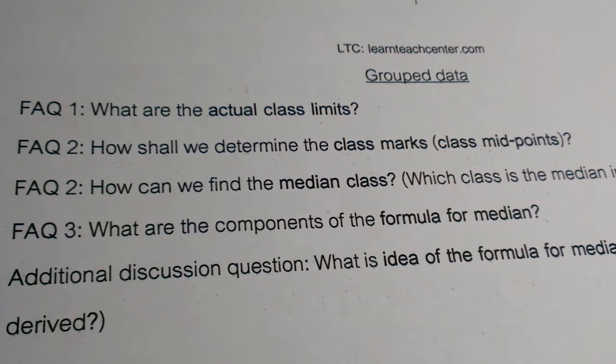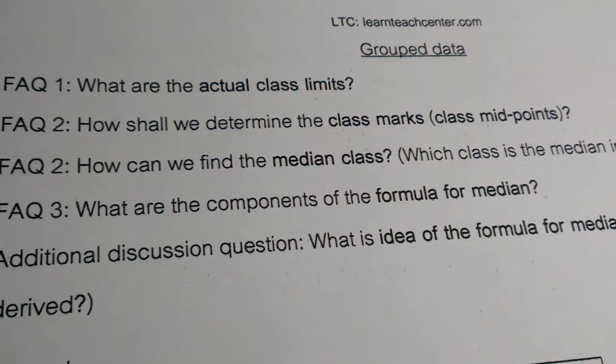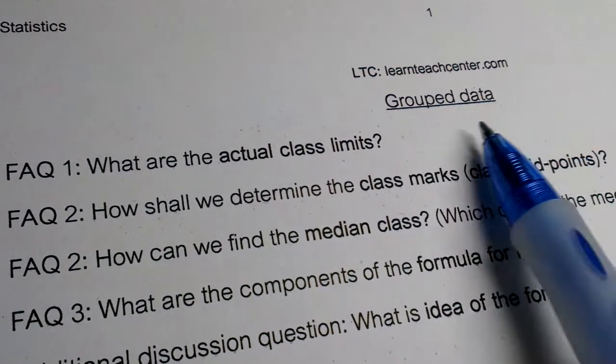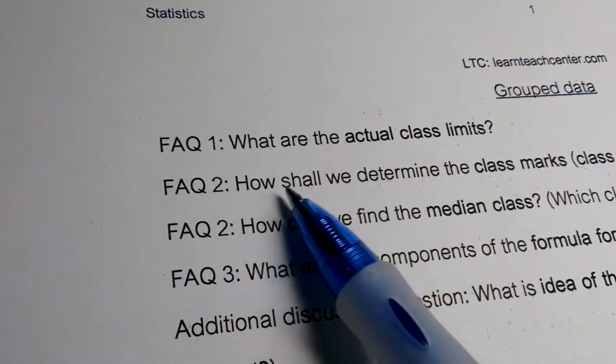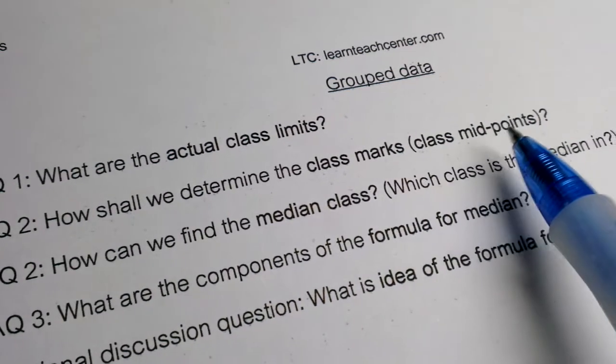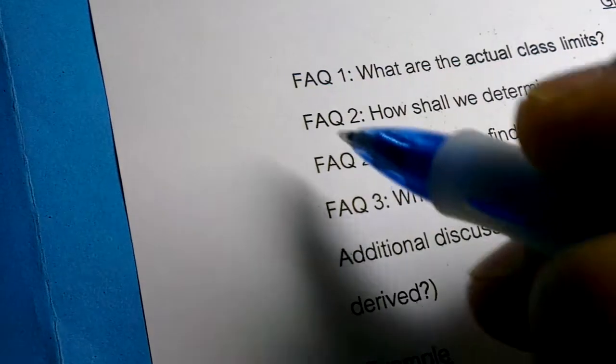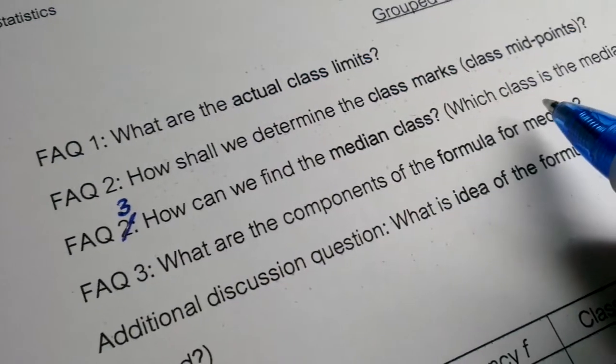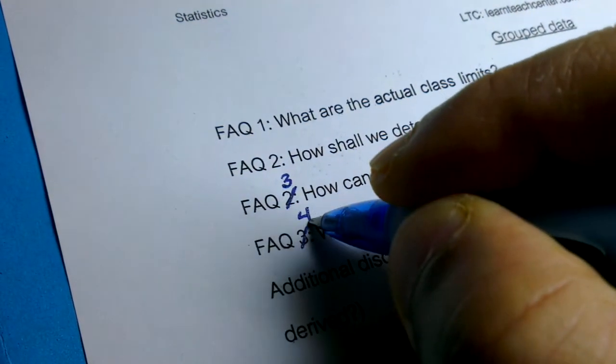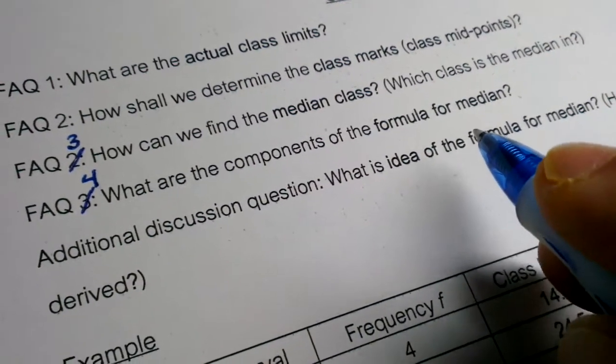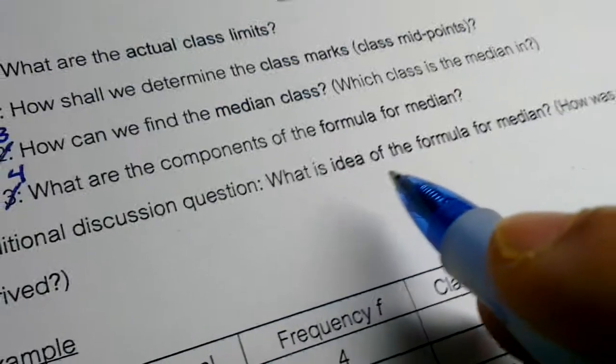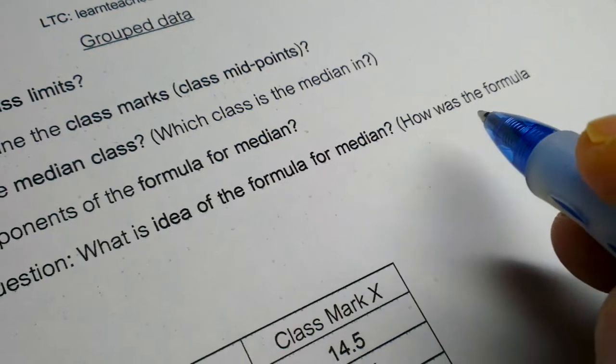Now I will answer some frequently asked questions of students. Question 1: What are the accurate class limits? We are thinking about grouped data in statistics. Question 2: How shall we determine the class marks, class midpoints? Question 3: How can we find the median class? Which class is the median in? Question 4: What are the components of the formula for median? Question 5: I will also talk about one additional question. What is the idea of the formula for median? How was the formula derived?